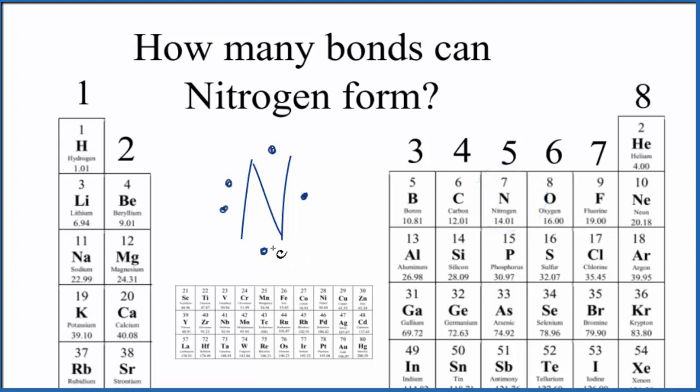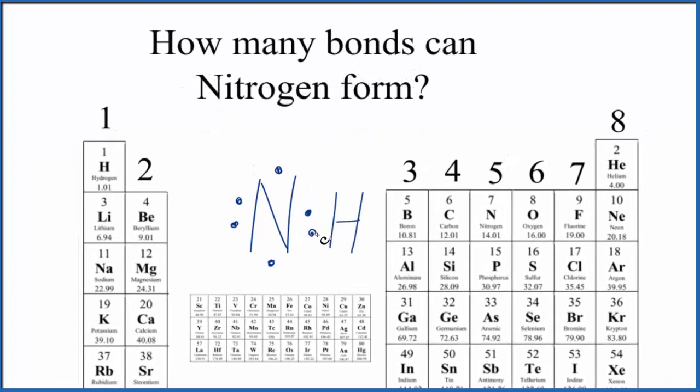We have these three unpaired electrons. For example, if hydrogen, which is in group one, has one valence electron, were to bond with nitrogen, the hydrogen shares its one electron, the nitrogen shares an electron. Hydrogen only needs two valence electrons for a full outer shell, so this hydrogen is very stable.